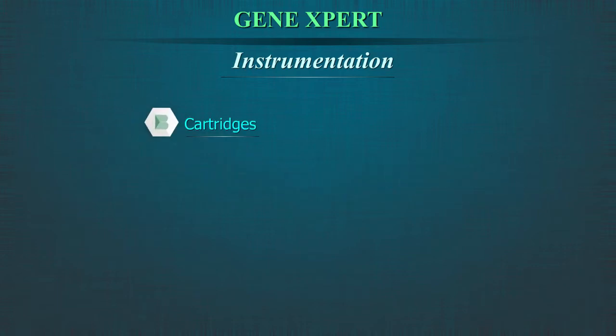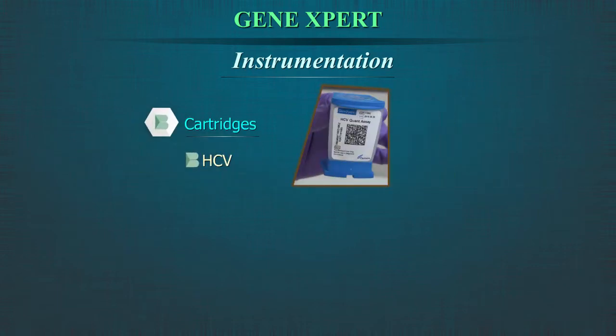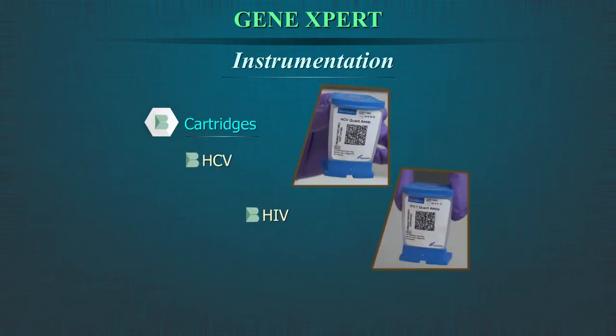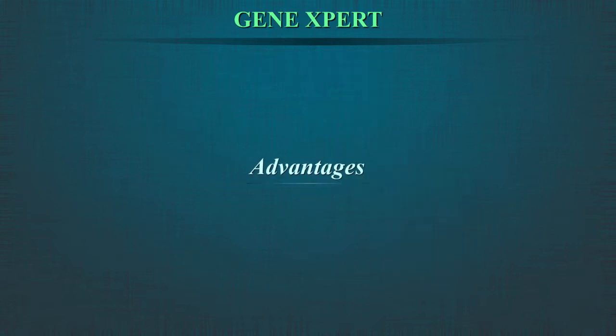Cartridges for other diseases such as HCV, HIV, and MRSA are also available and can be run on the GeneXpert system in a similar fashion.